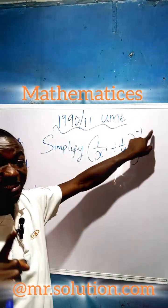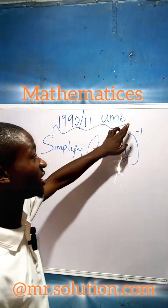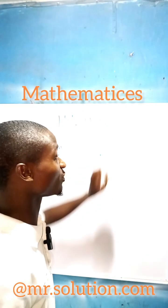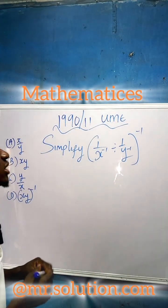The first thing you're going to look at is that our exponent is negative. Now, because our exponent is negative, what we are going to do is look for the reciprocal of the base.